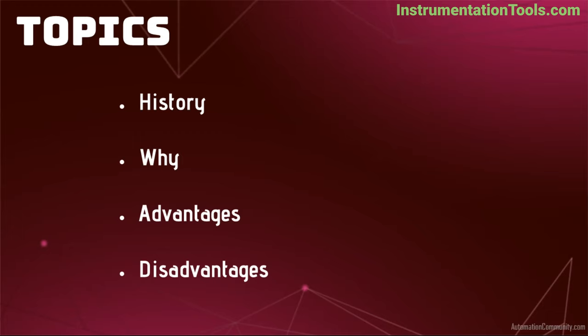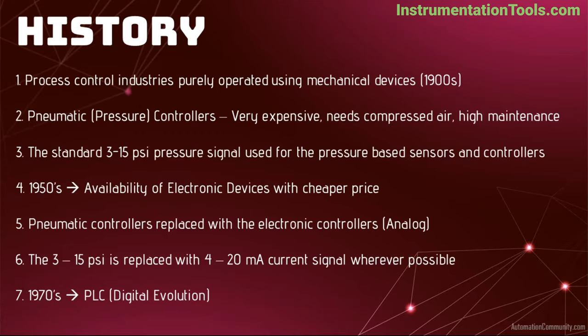Advantages and disadvantages. In the olden days, industries were equipped fully with mechanically operated devices like pneumatic sensors and controllers. Pneumatic means pressure. Pneumatic devices use pressure as a medium for the measurement and to control applications in the industries. Pneumatic devices generate an output signal in the range of 3 to 15 pounds per square inch. The 3 PSI represents 0% of the measured process variable, and the 15 PSI represents 100% of the measured process variable.